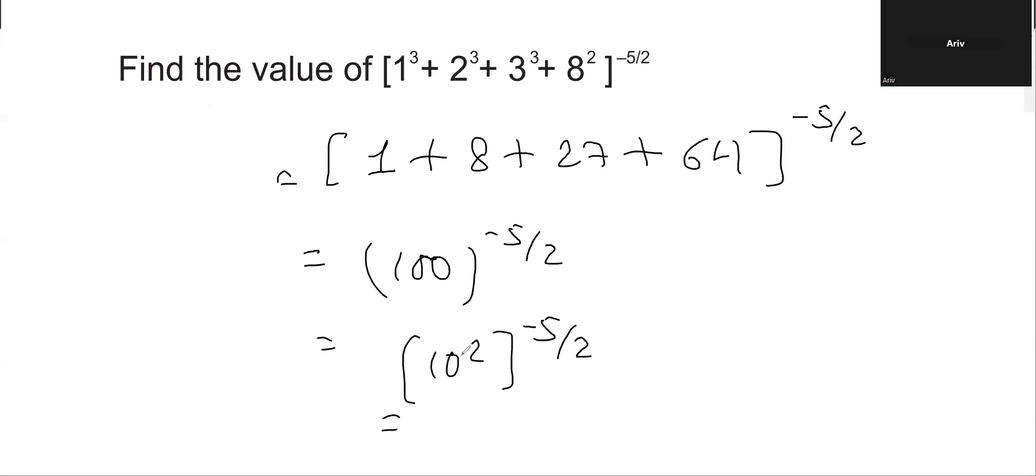So 2 and 2 cancel, and we get 10 raised to the power -5, which can be further simplified.